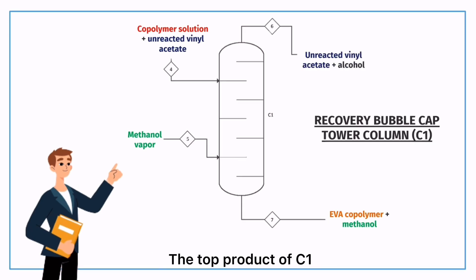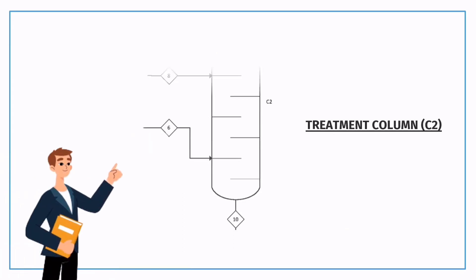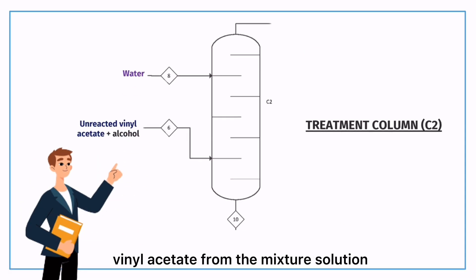The top product of C1 is the unreacted vinyl acetate and a percentage of alcohol that will go to treatment column C2. In the treatment column C2, water is used as solvent to recover the unreacted vinyl acetate from the mixture solution. Vinyl acetate is recovered as the top product of C2 while the alcohol and water mixture are sent as bottom product to another treatment column C3.